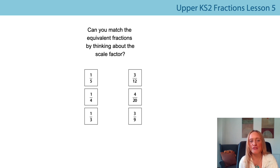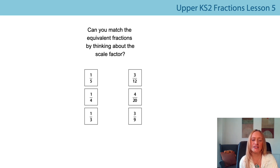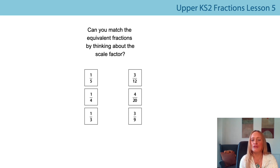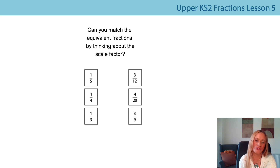Then we were matching equivalent fractions. If we start with a fifth, the scale factor is five. So we're looking for another fraction with the same scale factor, and we can see that will be four twentieths. A fifth and four twentieths are equivalent because four times five is twenty. For a quarter, the scale factor is four, and the matching fraction is three twelfths — so you should have matched a quarter and three twelfths.